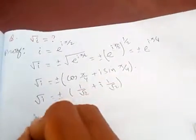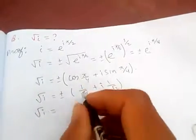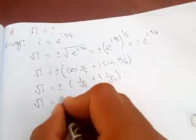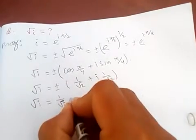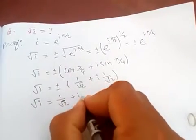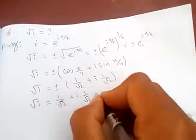So square root of i is 1 over root 2 plus i times 1 over root 2,